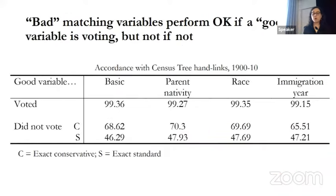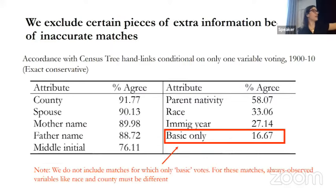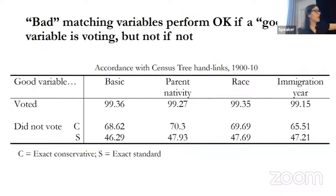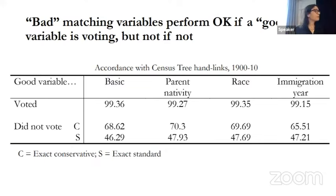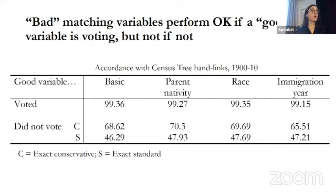In the more typical case where lots of variables vote, we split into good variables (our five) and bad variables. If one of the good variables voted alongside bad variables, accuracy remains fine. But if a good variable did not vote in cases where bad variables did vote, accuracy in the conservative case drops to around 70 percent, and in the standard case below 50 percent. The bad variables don't seem to add much: we achieve good accuracy without them, and if they're the only ones willing to make a match, that match is usually not good.